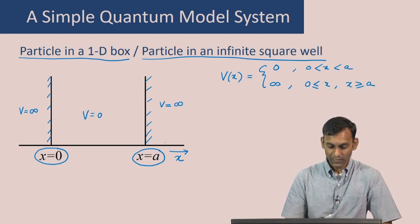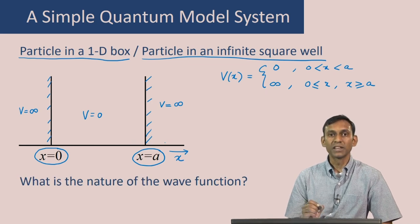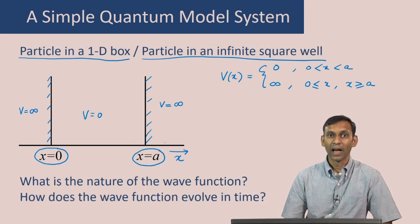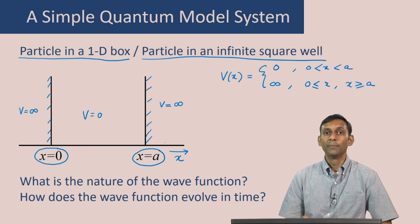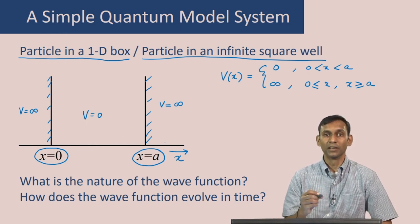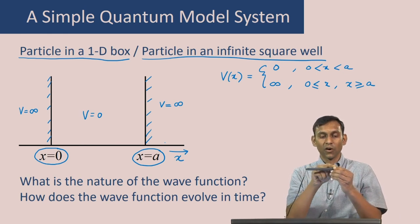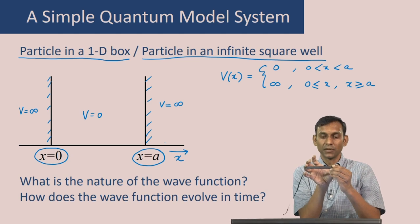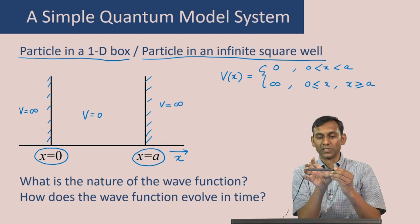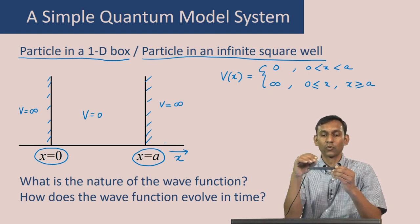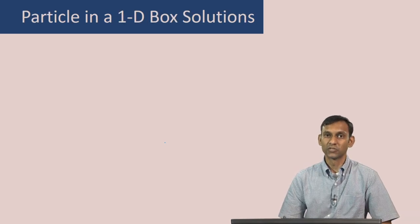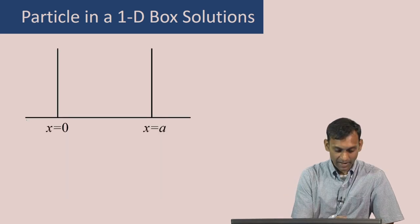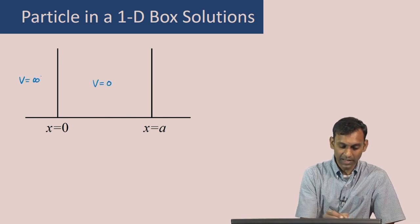So the particle is confined in this region. The question is: what is the nature of the wave functions of the system, and how does the wave function evolve in time? You can imagine the system to be a particle moving along a rod. As long as the particle is confined to this region, its potential energy is 0, but it cannot go outside. So the potential energy is infinite in regions outside. Let us examine how the solutions of this problem look.